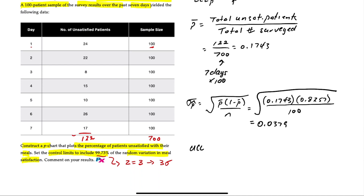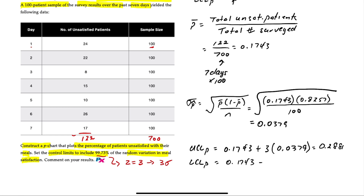Now we can determine the upper control limit, which is 0.1743 plus three standard deviations times 0.0379, giving an upper control limit of 0.2881. The lower control limit is 0.1743 minus 3 times 0.0379, giving a lower control limit of 0.0605. Note these are control limits for the proportion p-hat. In percentage terms, the upper limit is about 28.8 percent unsatisfied and the lower limit is about 6.05 percent.